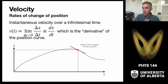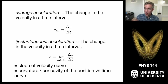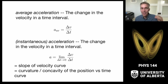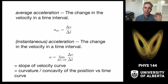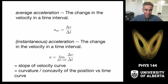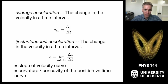We have the idea of instantaneous velocity. We can also talk about acceleration — the change in velocity over a time interval. The average acceleration is over a finite time difference, and we can carry out the limit again to get the instantaneous acceleration at an infinitesimally small time interval. That's the limit of delta-v over delta-t as delta-t goes to zero — the slope of the velocity curve. For reasons you'll explore in calculus, it's also equal to the curvature, or concavity, of the position-versus-time curve.